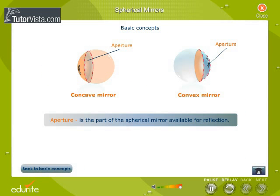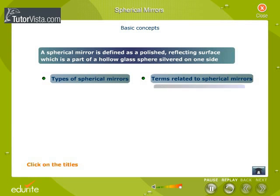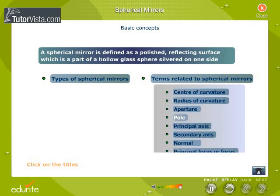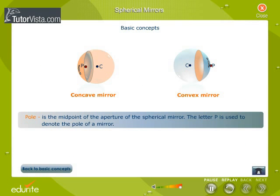Aperture is the part of the spherical mirror available for reflection. Pole is the midpoint of the aperture of the spherical mirror. The letter P is used to denote the pole of a mirror.